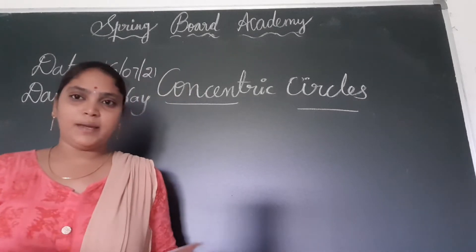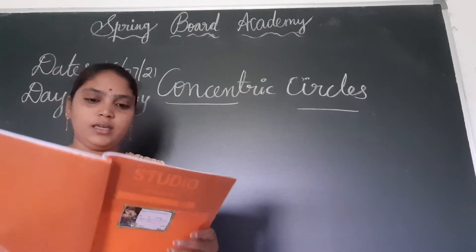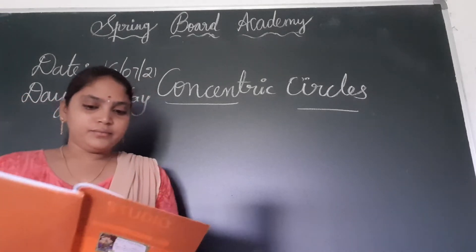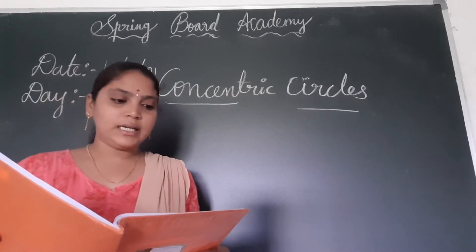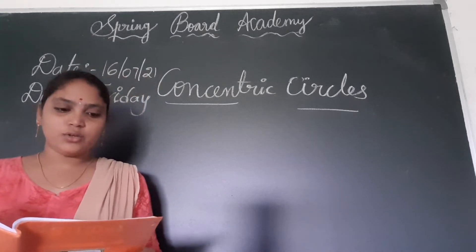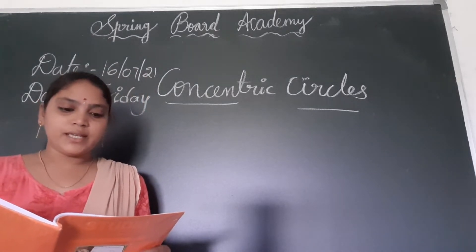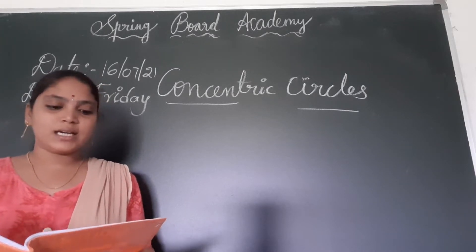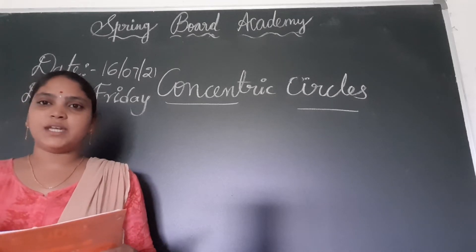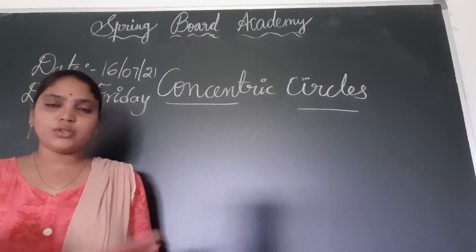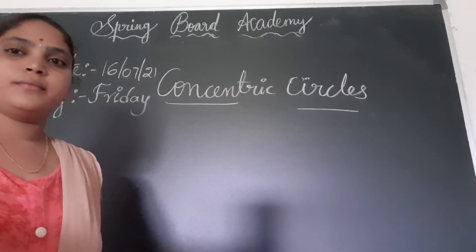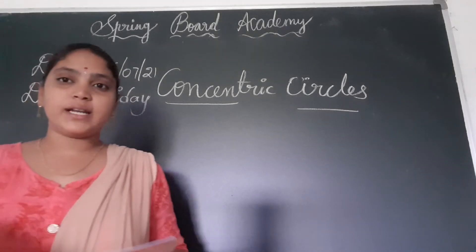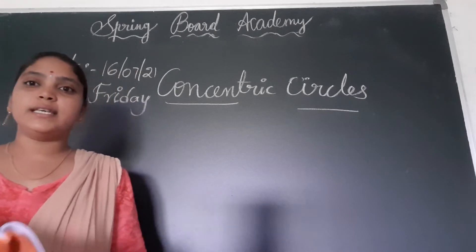First, everyone open page number 18. Check activity 1.19: Draw two circles using a compass. The circles should be of different sizes, but both circles should have the same center. You have to draw two circles with different sizes but the same center.